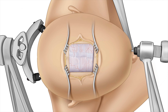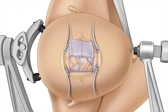Now that the dura has been exposed, we plan our dural opening to allow access to the interhemispheric corridor. The dura is opened in a C-shaped fashion, with its base at the approximate location of the superior sagittal sinus. Once the dura is opened, it's tacked up using multiple sutures.